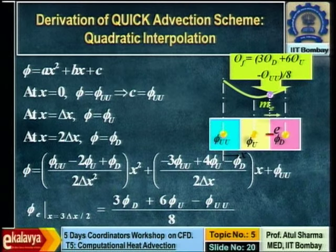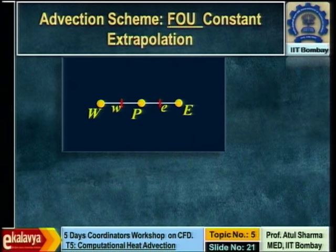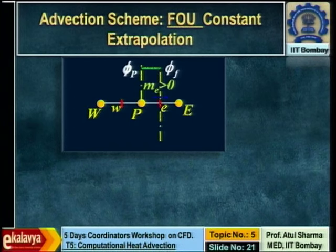A student asks about the advantage of the QUICK scheme for pure advection. The answer is that its importance comes when you combine advection with diffusion. For pure advection, first-order upwind may be sufficient, but in actual problems we always have a combination of the two, and that is where higher-order schemes matter.